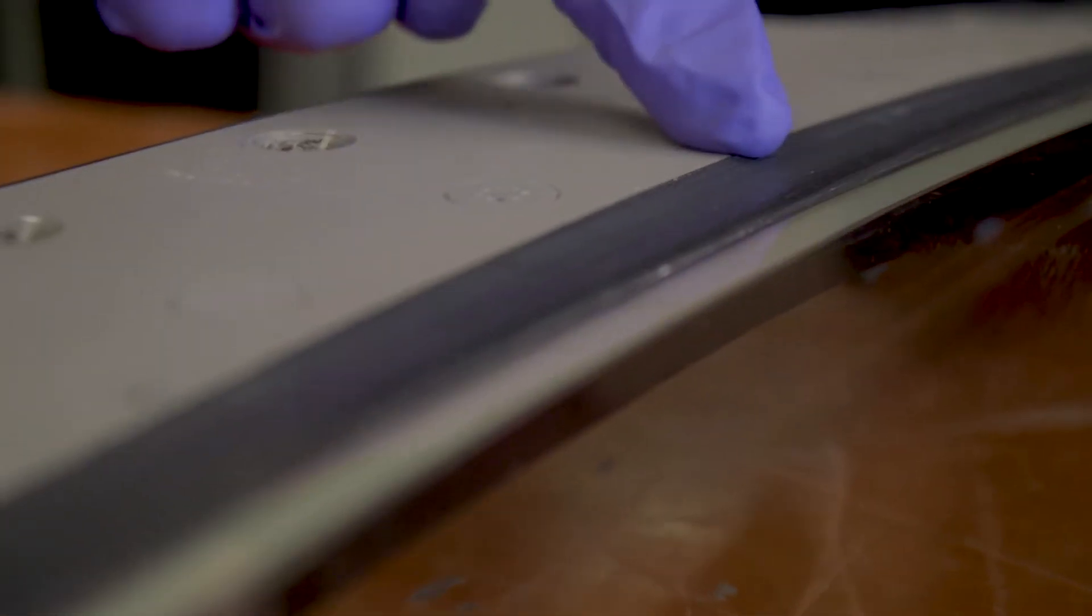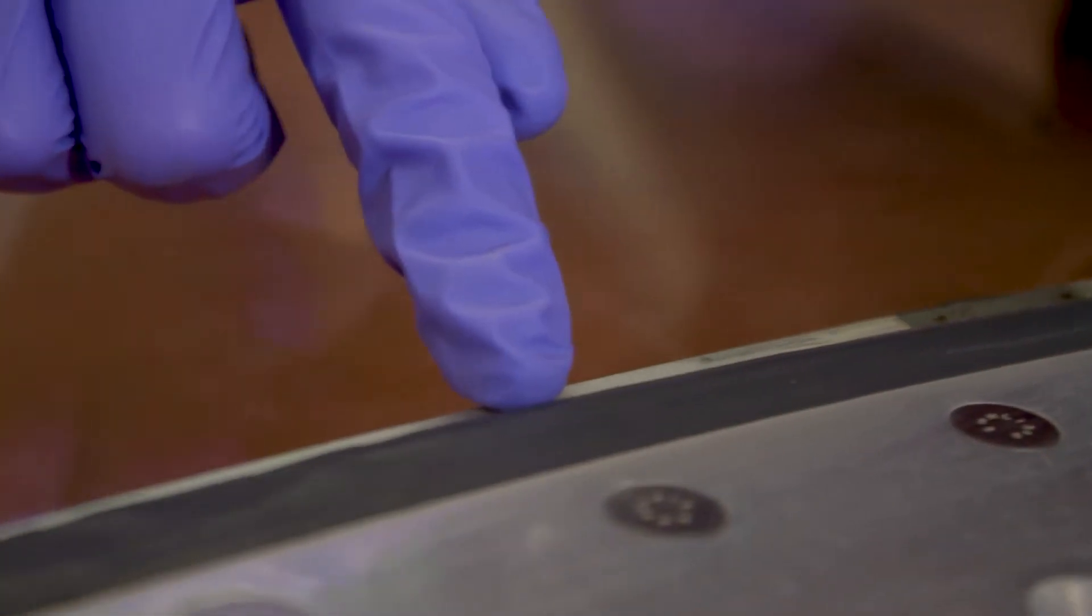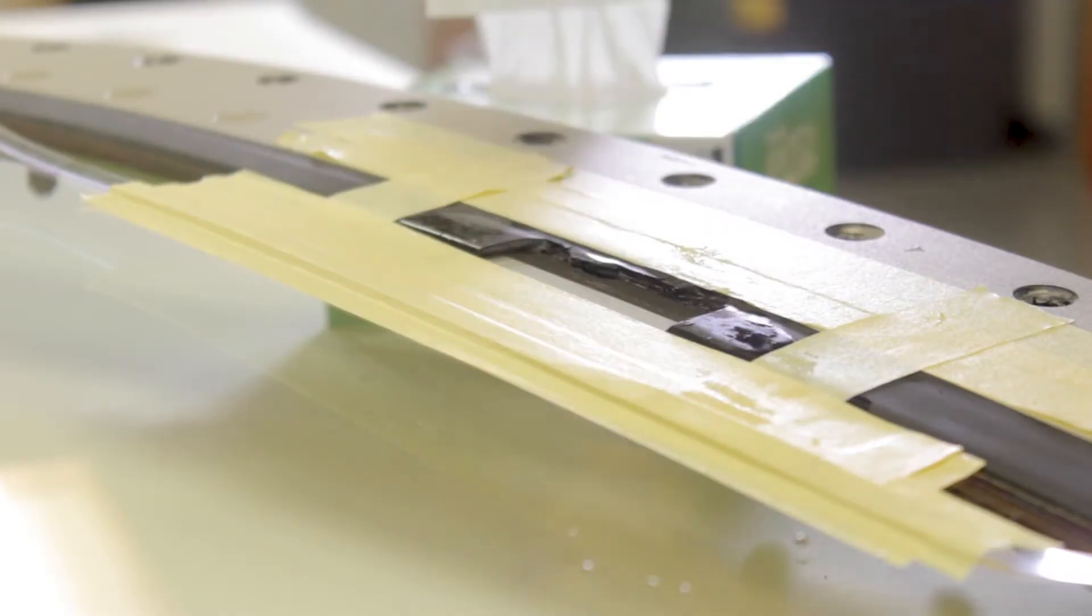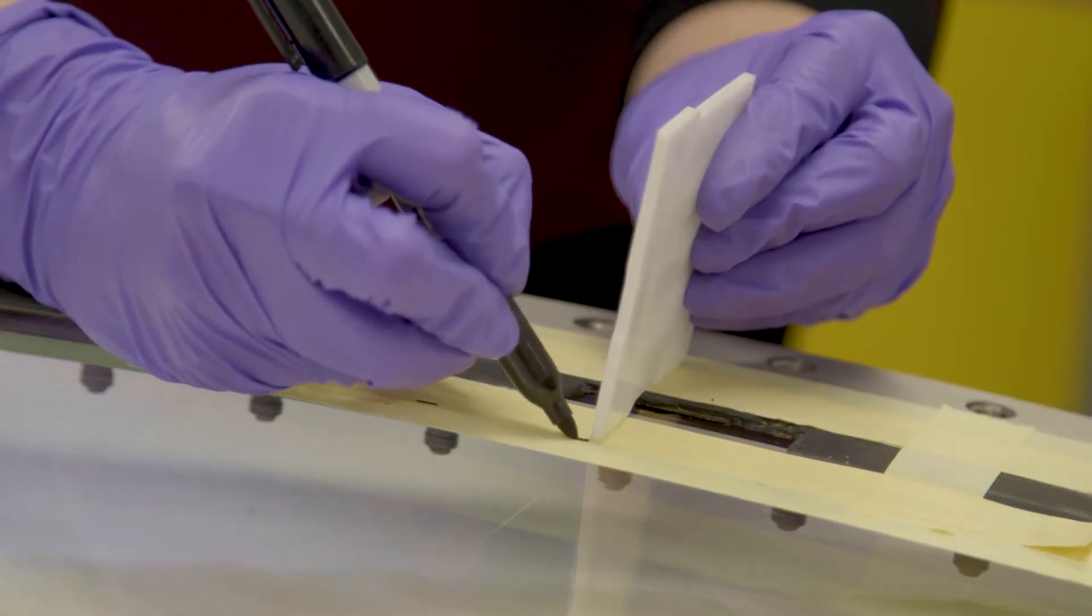PPG recommends routine visual inspection and maintenance of the moisture seal to maximize service life of an aircraft window. The following video outlines the proper repair procedure for the moisture seal.